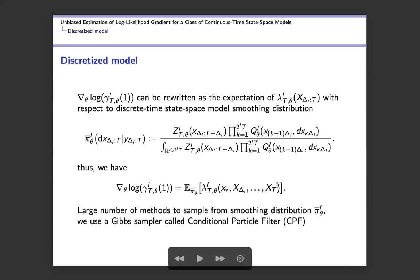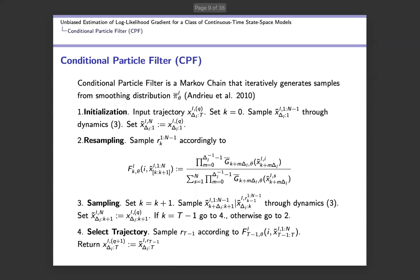To get an evaluation of the gradient of the log-likelihood under this discretization, we can simulate trajectories from the smoothing distribution, evaluate lambda on these trajectories, and take an average. The first task is: how can we sample from a smoothing distribution? In this project we use a Gibbs sampler called the conditional particle filter to generate samples from a smoothing distribution.